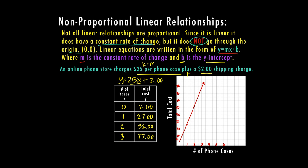I still have a constant rate of change, but I did not go through zero, zero. I went through zero, two. That would be my first point. So this one is going to end up being a non-proportional linear relationship. We're going to use that formula Y equals MX plus B.